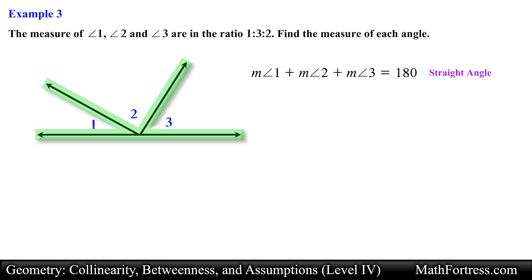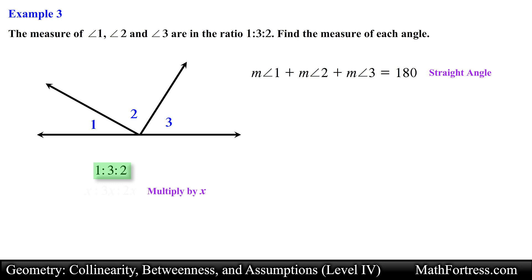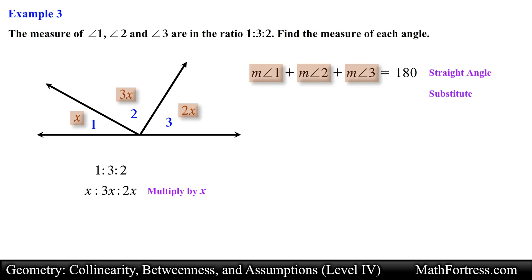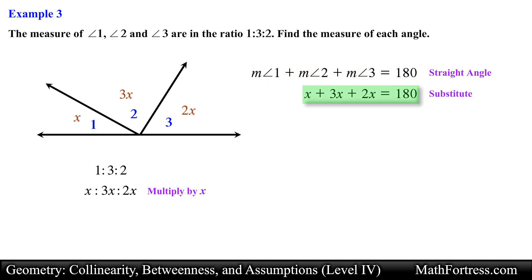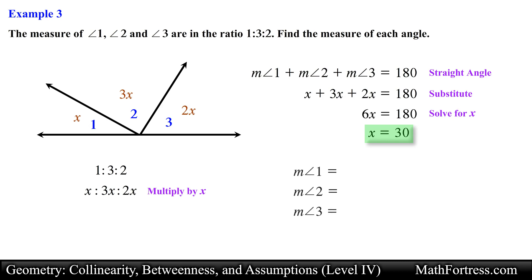Next we need to determine the algebraic relations between the angles. Since the ratio between the measures of the angles is 1 to 3 to 2, if we multiply all values of this ratio by x we obtain an equivalent ratio. By doing this we assign an algebraic expression to each of the 3 angles. Substituting these expressions into the geometric relation and solving for x, we obtain x equals 30. Substituting back, we obtain 30, 90, and 60 degrees. This is our final answer.